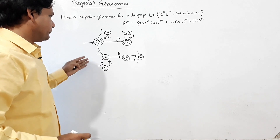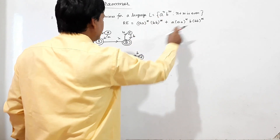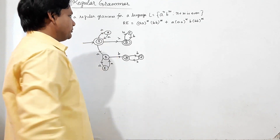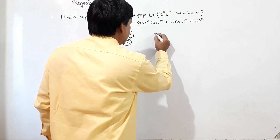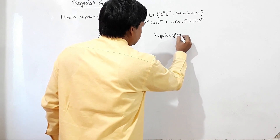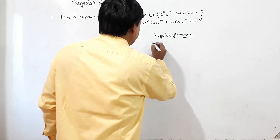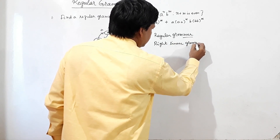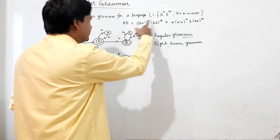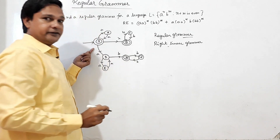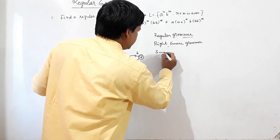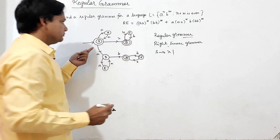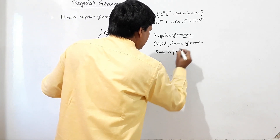This is the non-deterministic finite automata for this language, and this is the regular expression for this NFA. Now I will write the right linear grammar. S is the start state and also a final state, so S generates lambda or aS.